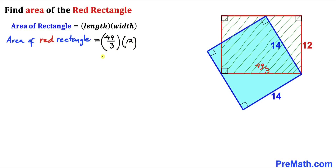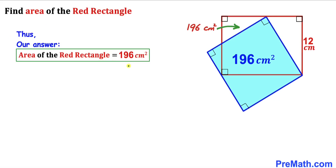Simplifying the right-hand side gives us 196 cm². So the area of the red rectangle is 196 cm² — the same as the area of the blue square! Thanks for watching, and please don't forget to subscribe to my channel for more exciting videos. Bye!